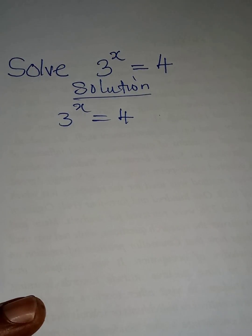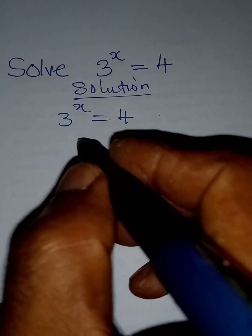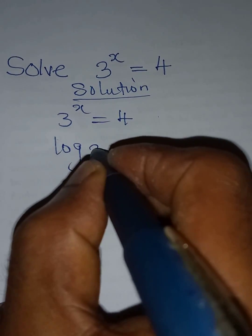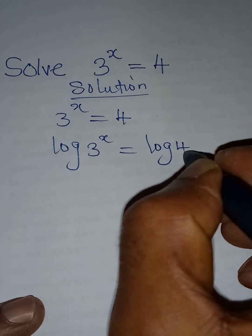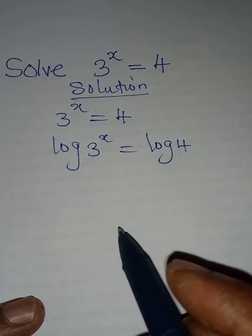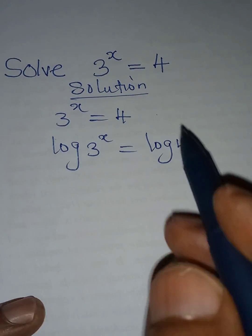So what you will do is just to take the log of both sides, so we're going to have log 3 to the power x equals log 4. And then there's a law that says this can go behind.